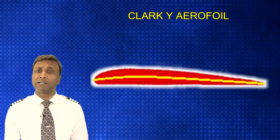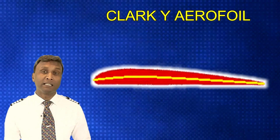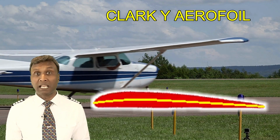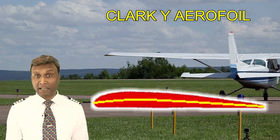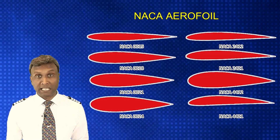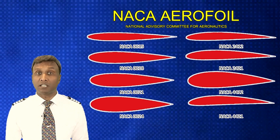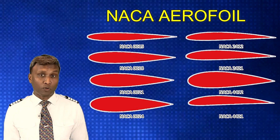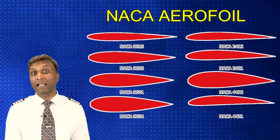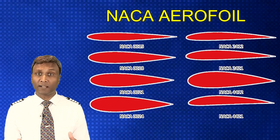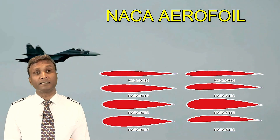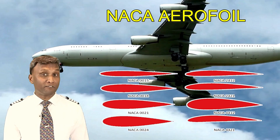Next, there's the Clark Y airfoil, renowned for its flat-bottomed cambered shape. This design offers stability and predictability, making it a popular choice for general aviation and light aircraft, where forgiving characteristics are essential, especially during take-off and landing. Then there's the NACA airfoil series, developed by the National Advisory Committee for Aeronautics. These airfoils come with specific numerical designations and offer a range of lift and drag characteristics, tailored for various flight conditions across different aircraft types. From low-speed trainers to high-speed fighter jets, there's a NACA series for every application.